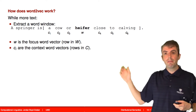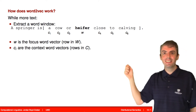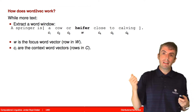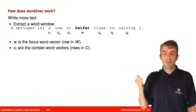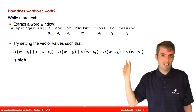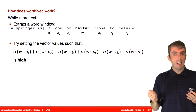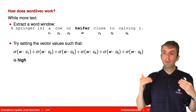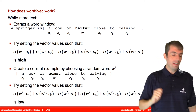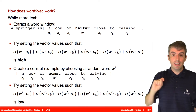The way training works: you take an example and focus on an individual word — let's say 'heifer.' The context has some number of words; let's say six context words. You want to make it so that the vectors corresponding to each context word, when you take the dot product with the focus word and pass it through a non-linearity like a logistic function, give a high value. But at the same time, you want other scores to be low. This is where negative sampling comes in: you choose a random word from the vocabulary — say 'comet' — and you want the dot product between that word's representation and the context words to be low.